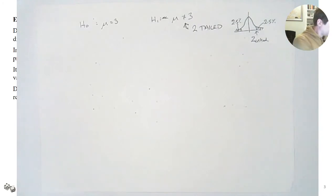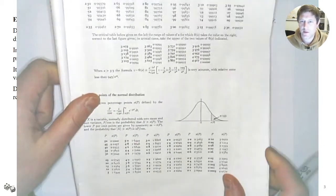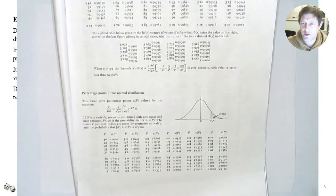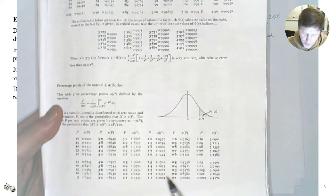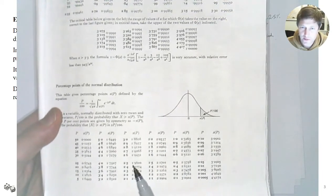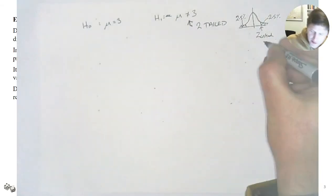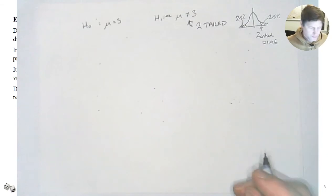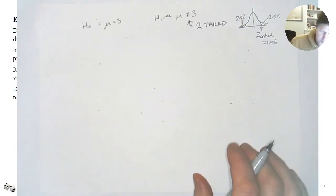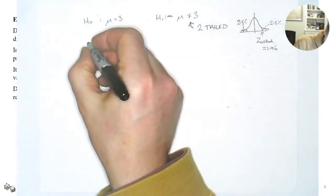Looking at the distribution, results within the main part suggest the null hypothesis is true with no significant difference in the mean, but results in either tail indicate a significant difference. Each tail is 2.5%, giving an overall significance of 5%. From the tables, the critical value of z is 1.96.